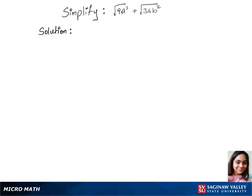We'll simplify this question. First, let's assume all variables represent non-negative real numbers. We'll write our first step by separating the square root between the terms, so that root of 9 times root of a cubed plus root of 36 times root of b squared.